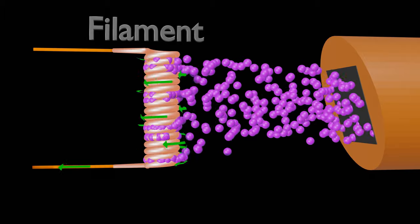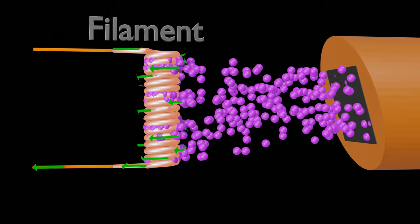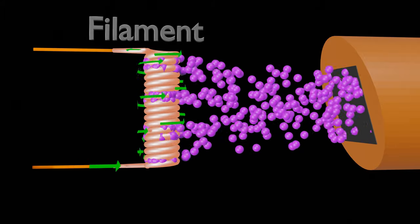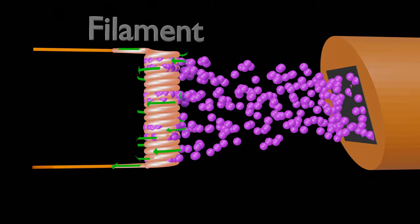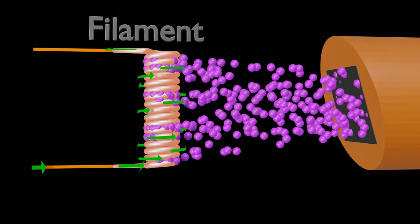If one increases filament current, more electrons will flow inside the X-ray tube, and more will be the tube current. Let's discuss filament circuit in details.